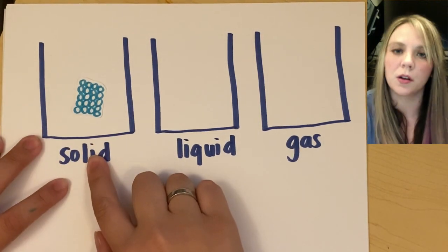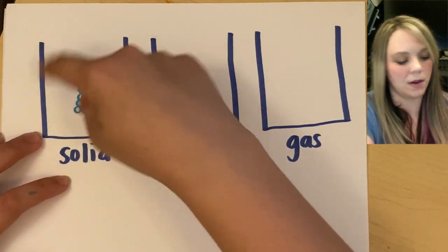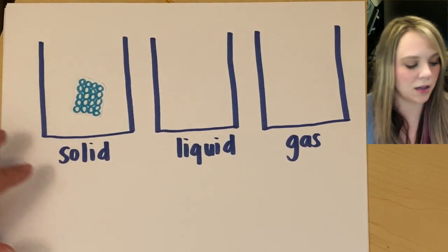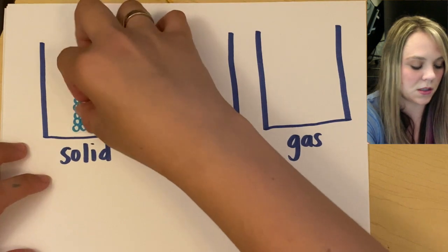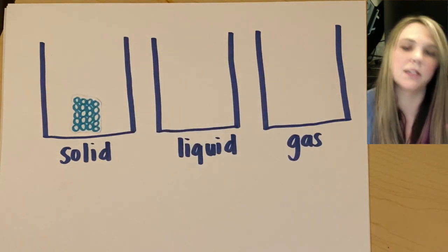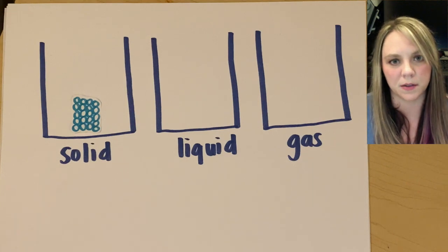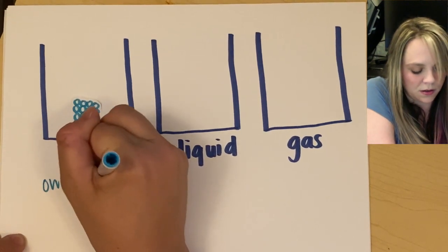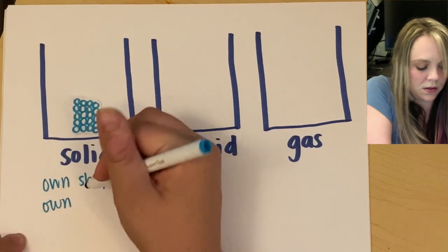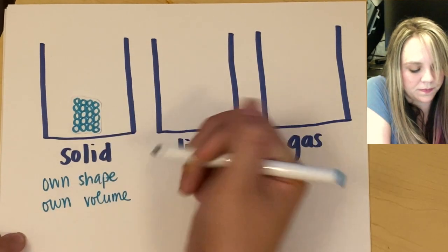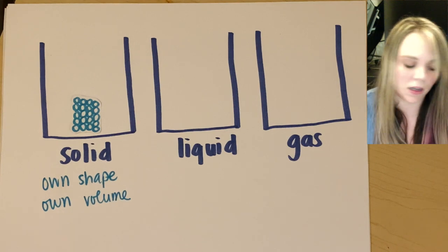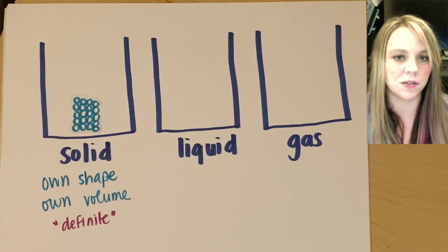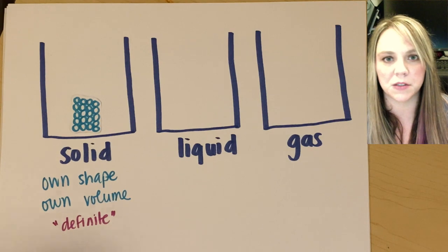But if we were going to draw a particle model of a solid, if you could imagine you had a cup on your desk, and you plunked something into it, you have a pencil and you put the pencil in the cup. If you put it in a cup, it just is going to go straight down to the bottom of the cup and stay there, right? It keeps its own shape. There's nothing that happens to it. It's not very exciting. So solids have their own shape and they have their own volume. Another way to say this is that they have a definite